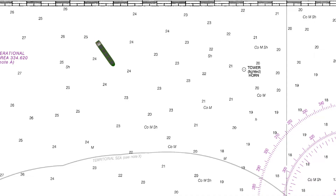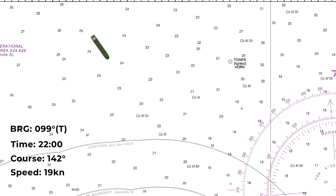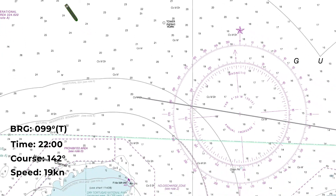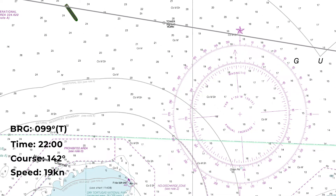To start we just note down everything we know. We take a bearing of the tower at 099 degrees true and we know the time is 2200. We also know that our vessel's course is 142 degrees and we're doing 19 knots. We can then start plotting on the chart using our compass rose to get a bearing of 099 and drawing a line of position on the tower.